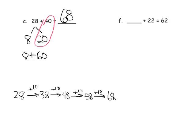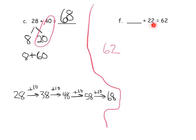For question f, we have a missing addend. Second graders will know they can use subtraction to find that missing value. Using the arrow method, I'll start with 62. Since we're adding by 22 to get to 62, we'll work backwards — subtracting by 10 gives us 52, and subtracting by another 10 gives us 42.